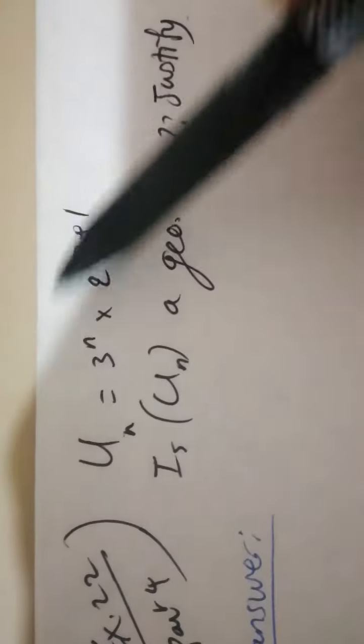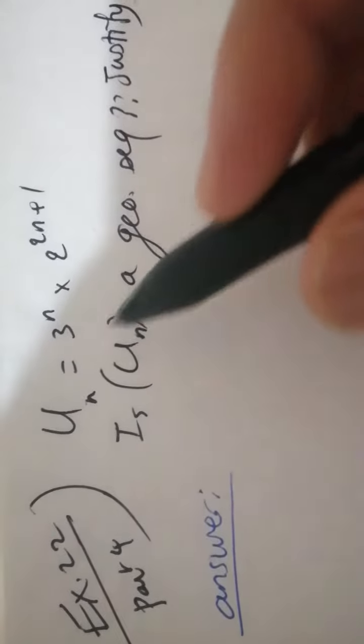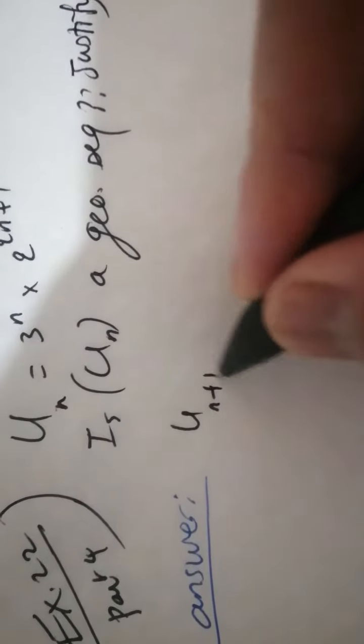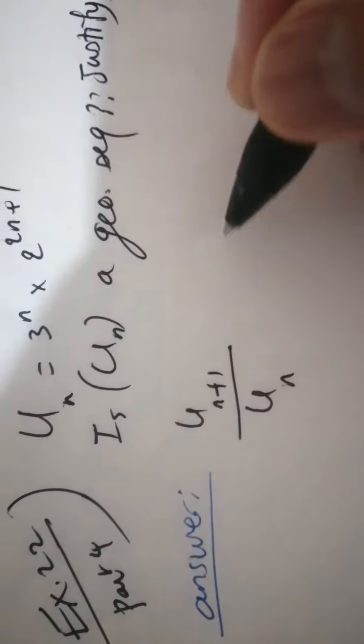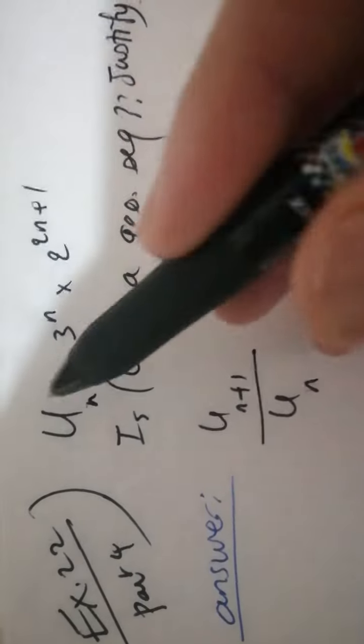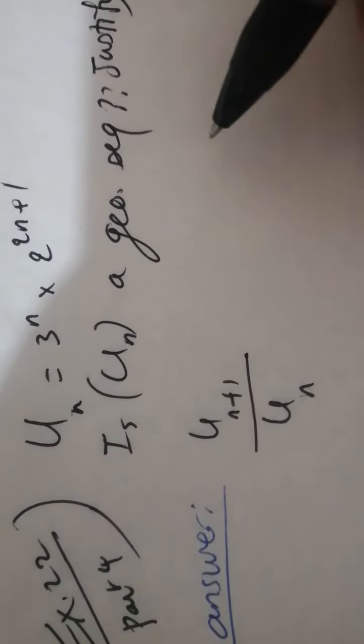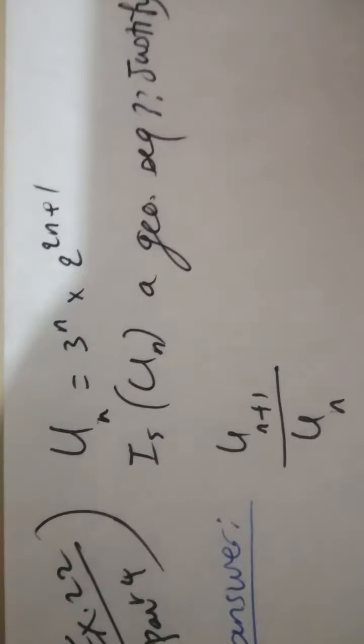As 22 part 4, we are asked to state whether UN is a geometric sequence or not. We have to follow the division procedure UN plus 1 over UN. If it is equal to a constant, then UN is a geometric sequence. If it is equal to a number containing N, in terms of N, then it is not a geometric sequence.